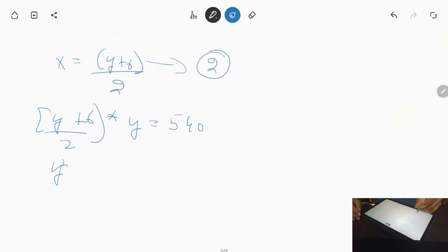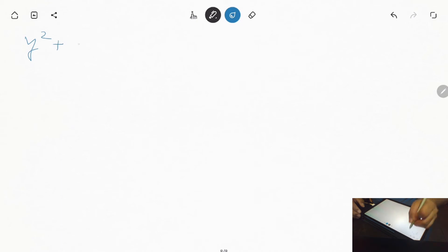So when we solve it, then Y squared plus 6Y equals 1080. So basically this becomes a quadratic equation, so we solve it.